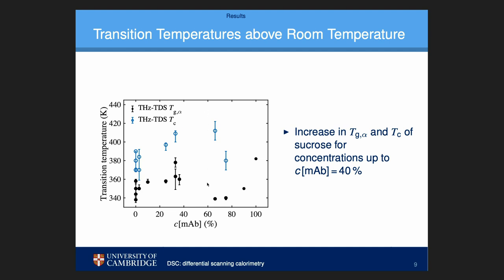However, at concentrations above 60%, there is a jump and the Tg_alpha is lower than it was before, and only then increasing again.